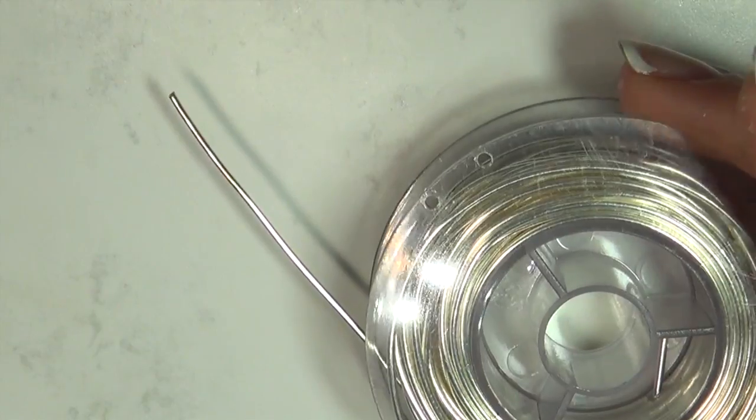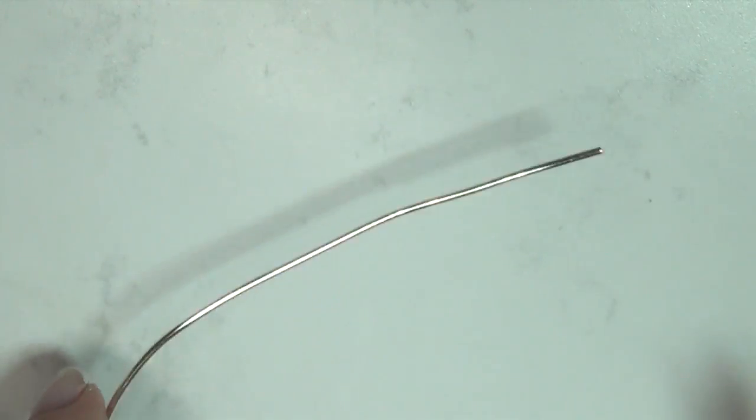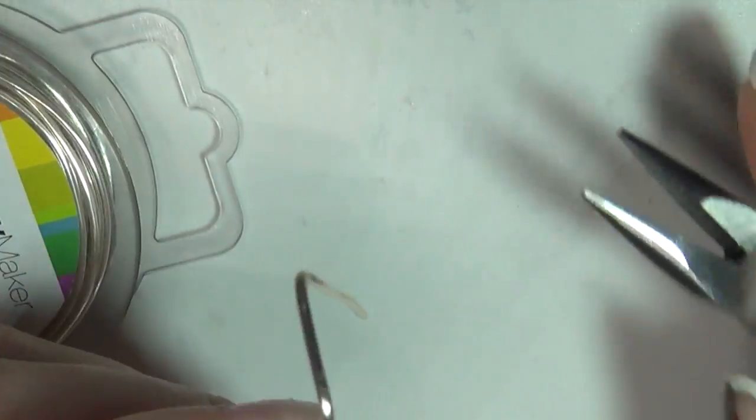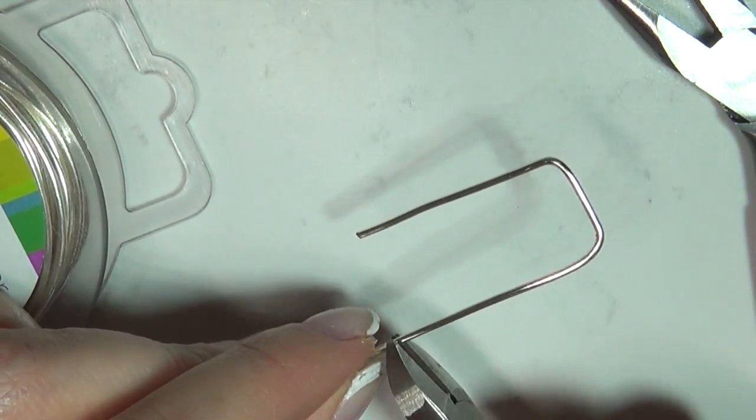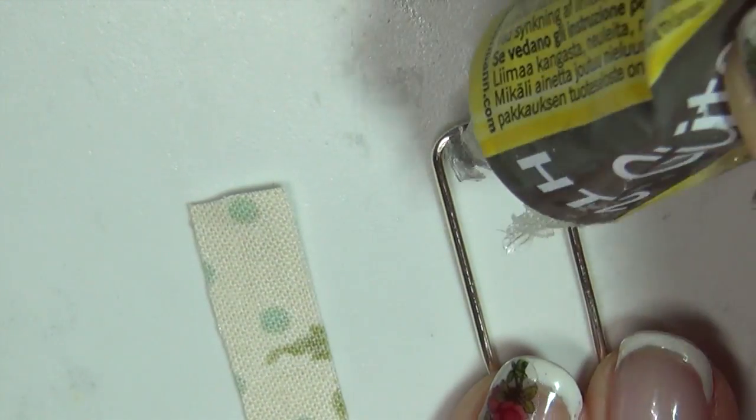Next we are going to make the pull up handle using some wire and some pliers. Cut off a piece of wire and use the pliers to form a squared hook. Glue a piece of fabric around the top for the handle.